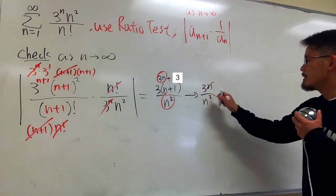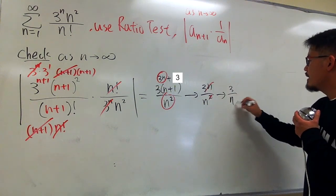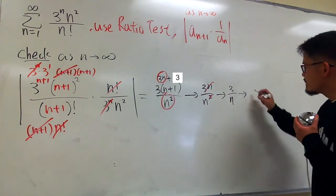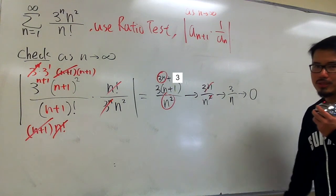you get 3 over n. And as n goes to infinity, you have 3 over infinity, so this is approaching 0.